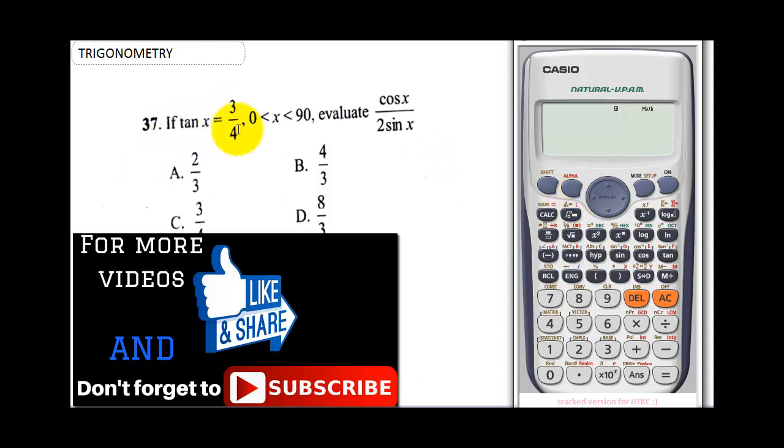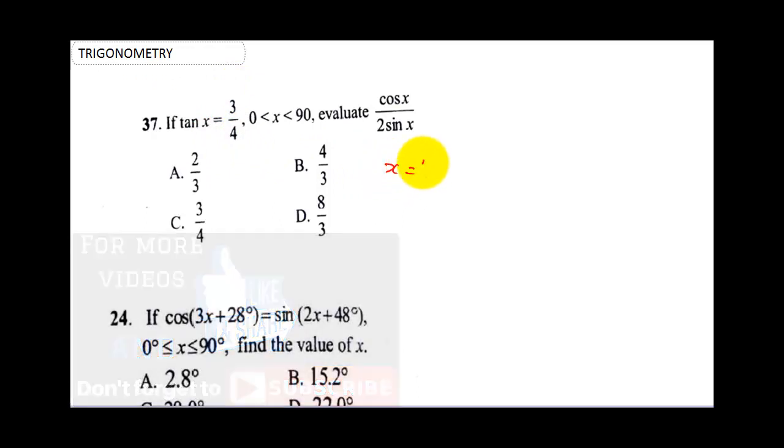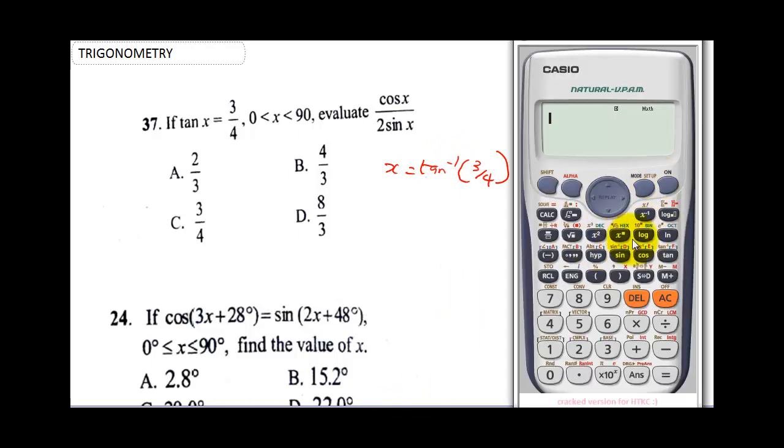Let's start. The first question says: if tan x equals 3 over 4 and 0 is less than x is less than 90, evaluate cos x over 2 sin x. If tan x is 3 over 4, that means x is equal to tan inverse of 3 over 4. So let's evaluate this: shift tan inverse of 3 over 4. This gives us 36.8698.